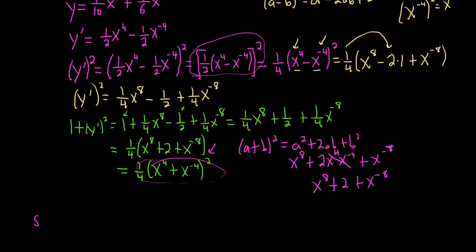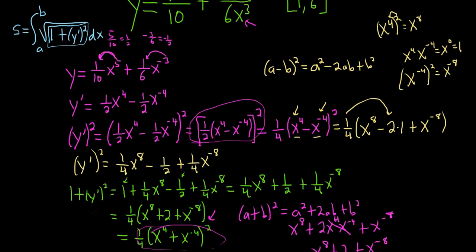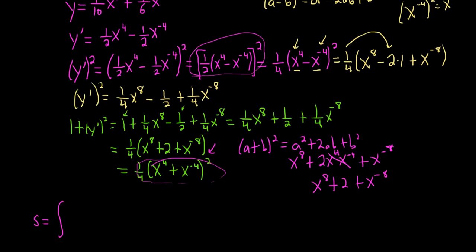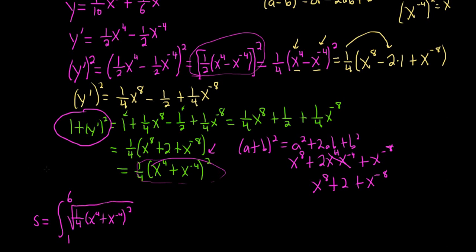So, finding the arc length, going from 1 to 6, we have the integral from 1 to 6 of the square root of 1/4 times (x to the fourth plus x to the negative 4) squared, dx. This is our 1 plus y prime squared, and then we take the square root.